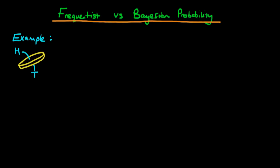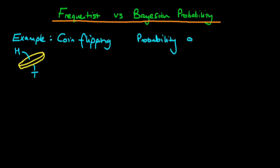In this video I want to talk about the difference between the frequentist and Bayesian views on probability. The example I'm going to talk about is the example of flipping a coin. We assume we have a coin with a head on one side and a tail on the other, and the question we want to answer is: what is the probability of getting a head? We're going to compare the frequentist view with the Bayesian view on probability.